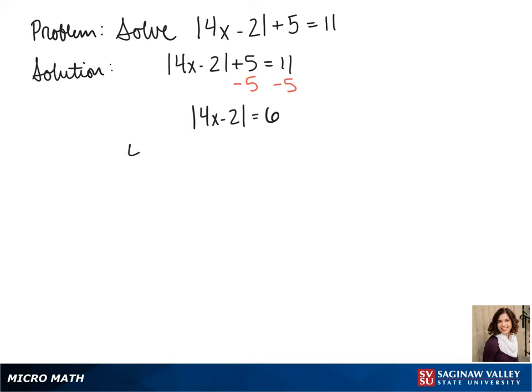Since what's inside of our absolute value bars could be positive or negative, we're going to set it equal to positive 6 and equal to negative 6.